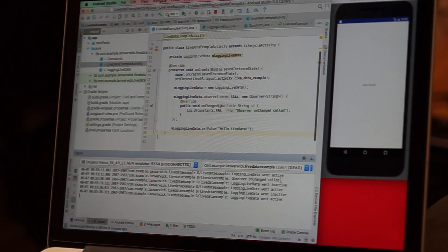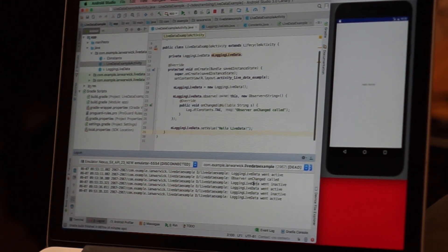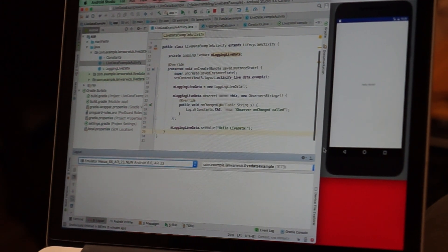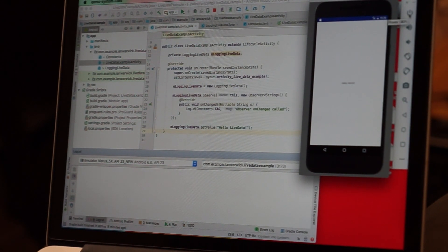The first thing that happened was logging LiveData went active, observer onChange was called, so this is where I set value on LiveData. The next thing you can see is that it went inactive and active.